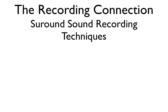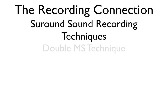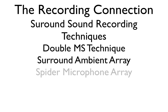Let's jump into surround sound recording techniques. Surround sound utilizes many speakers in a 360-degree listening environment. A very common example is Dolby 5.1 surround sound, which uses five speakers and a subwoofer for the lowest frequencies, placed all around the room to give you a 360-degree listening experience. There are a few micing techniques that allow this to happen. We're going to talk about three: the double MS technique, surround ambience array, and the spider mic array.